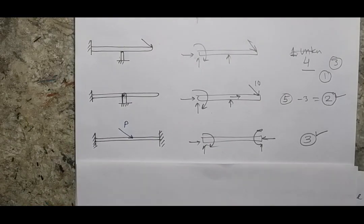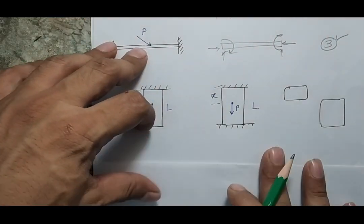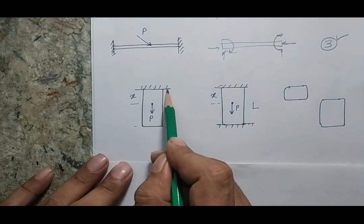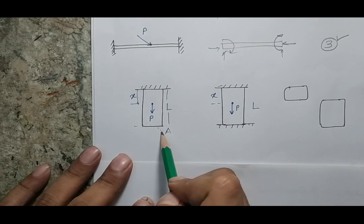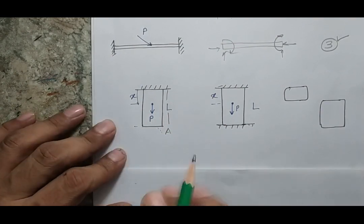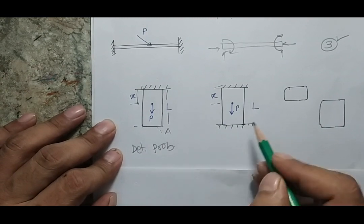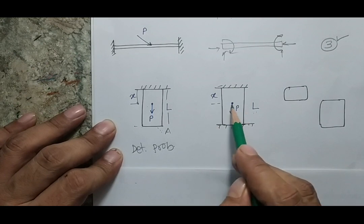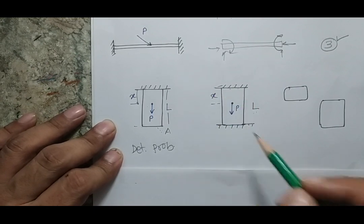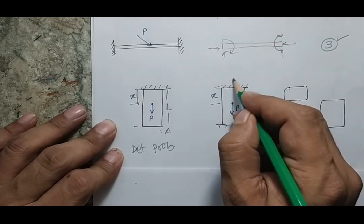Now let's look at a problem typical in Strength of Materials. First case: a bar fixed at the top, length l, cross-section A, with a force P applied at distance x from the fixed end and the other end free. Making the free body diagram shows this is statically determinate. Second case: the same bar with two fixed supports and the same force P applied at distance x from the top. The question is whether we can find the reaction forces R1 (top) and R2 (bottom) at both supports.